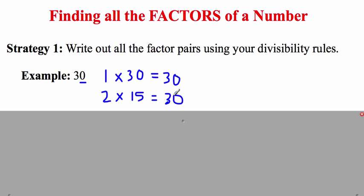We also know that 30 is divisible by 3 because if you add the digits together, 3 plus 0 equals 3, and 3 divided by 3 is 1. So 30 is also divisible by 3, meaning 3 times 10 equals 30.